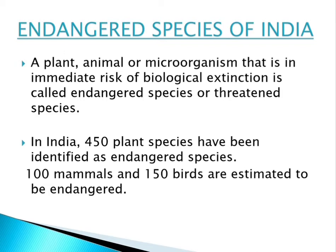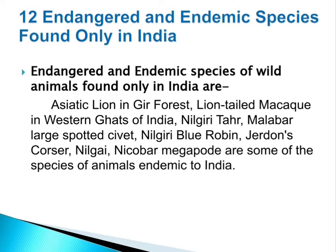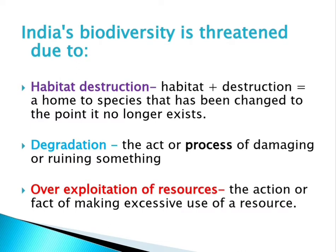About 100 mammals and 150 birds are estimated to be endangered in India. Throughout India, there are 12 endangered and endemic species of wild animals found only in India. Those include the Asiatic lion, found in Gir forest; the lion-tailed macaque, which occurs in the Western Ghats; Nilgiri thar, Malabar large spotted civet, Nilgiri blue robin, Jerdon's courser, Nilgai, and the Nicobar megapode.